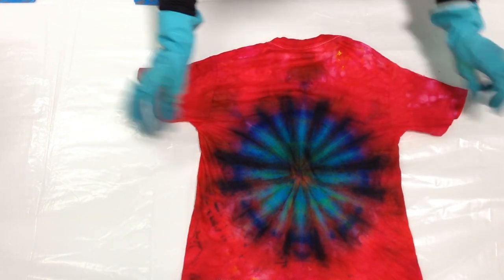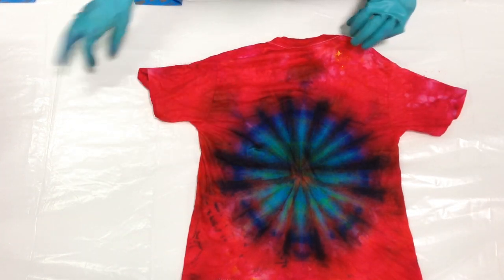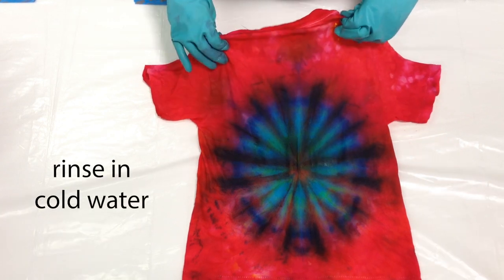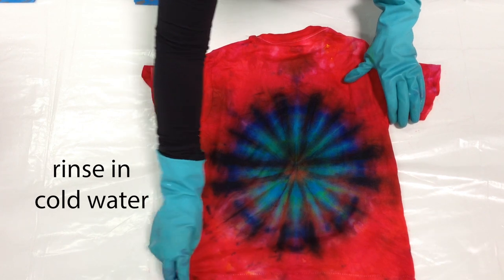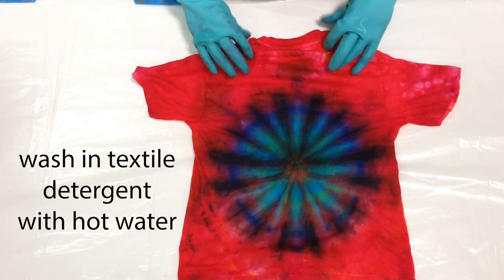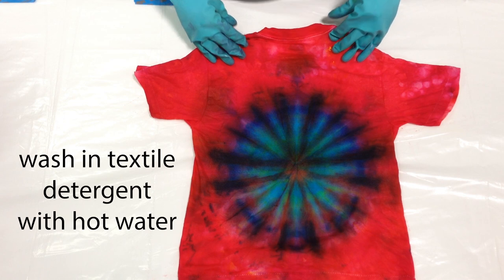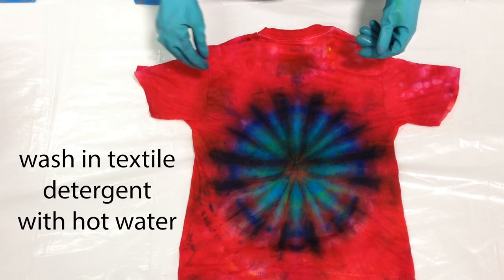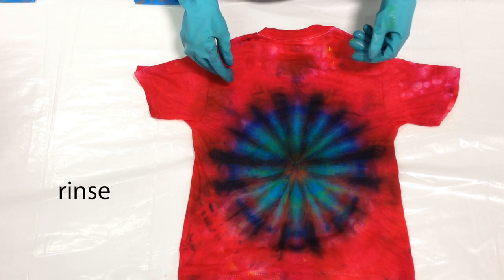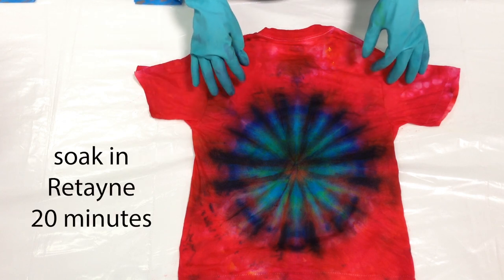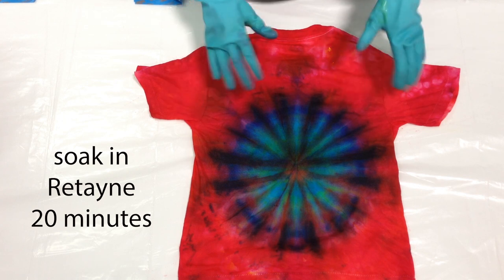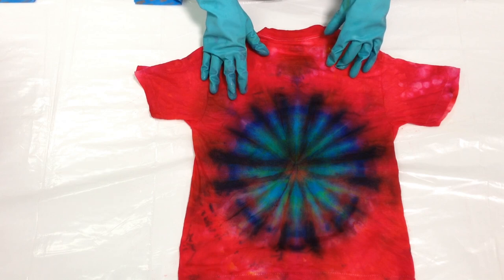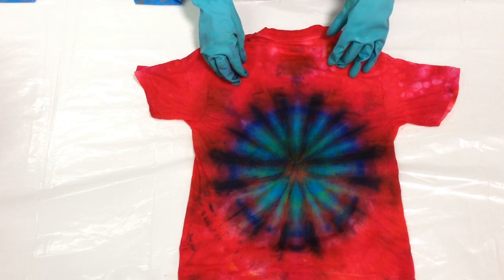What I'm going to do now is take the t-shirt over to the deep sink and rinse it in cold water until the water runs clear. Then I'm going to wash it in hot water with textile detergent, which is a special kind of detergent that will take any loose dye and send it away. Then I'll rinse that out and then let it soak and retain in hot water for about 20 minutes and rinse that out. I'll take care of this behind the scenes and be back with you to show you the final result.